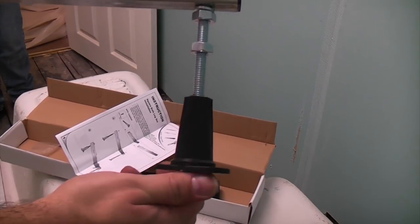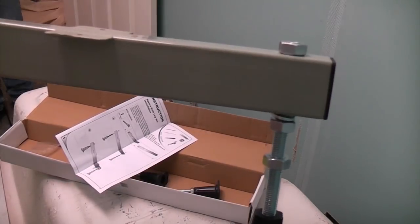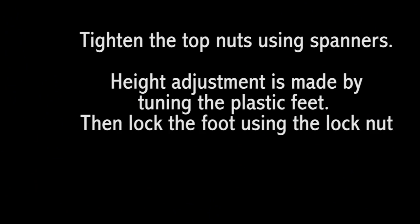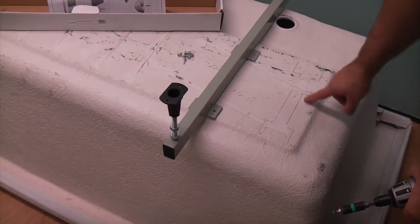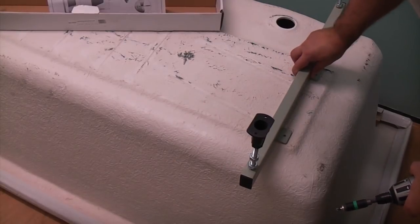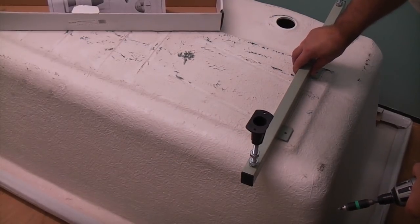That's one of the feet that's been fitted to the bar that's going to go across the bath. If you look at the bath, it's actually marked out where to put the legs and the holes in the bottom have been pre-drilled for you.